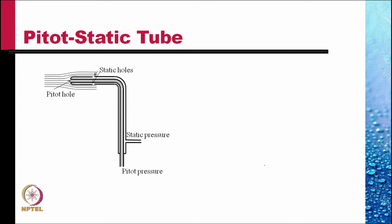The pitot-static tube consists of two coaxial tubes. The central tube is open at the front end, so it picks up the stagnation pressure or pitot pressure. On the outer sleeve there are a number of holes called static holes, which pick up the static pressure at that location. The outer sleeve communicates to one pickup point and the inner tube, which picks up the pitot pressure, communicates to another pickup. We attach a U-tube manometer between these two ports, and that gives Δp directly.